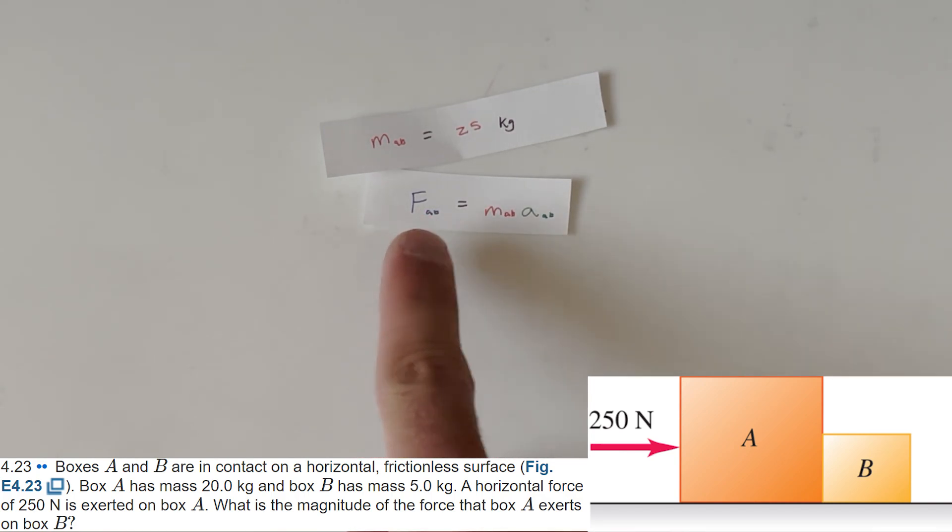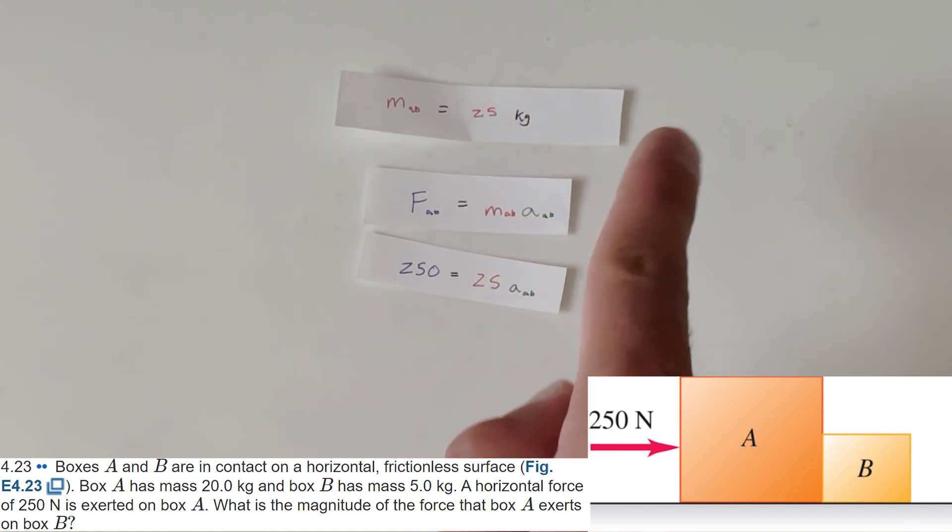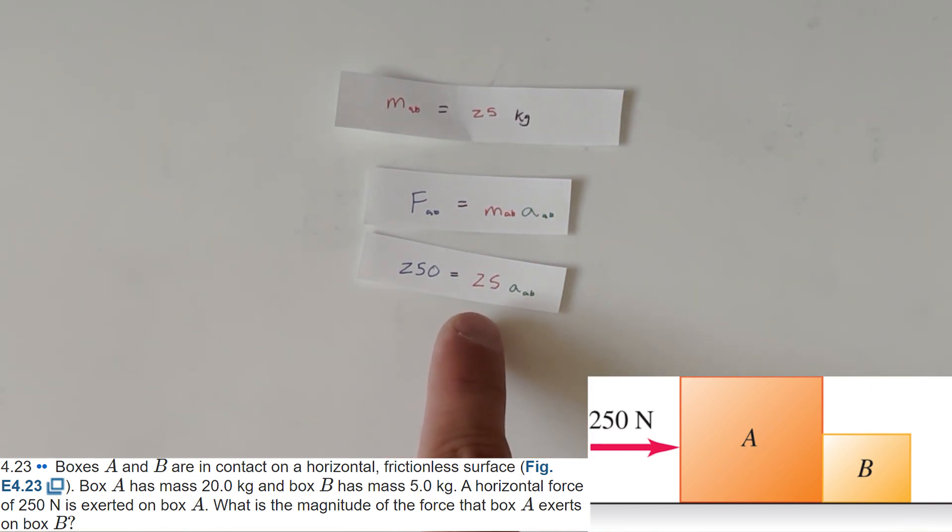So we know that force AB is 250. That's the force being applied to both blocks. We know mass of AB is 25 kilograms. We just figured that out. So we can put that 25 there. And then we have acceleration of AB. Now, why do we want acceleration of AB? Well, acceleration of AB is going to be the same as acceleration A or acceleration B.